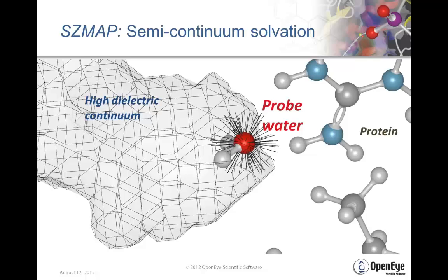Semi-continuum solvation involves augmenting continuum dielectric with a single explicit probe water. We fill our region of interest, like a binding site, with a high dielectric continuum and use a single explicit probe water at a specific site to interact with both the continuum — which is a water-water interaction — and also with the protein and other molecules in its neighborhood.